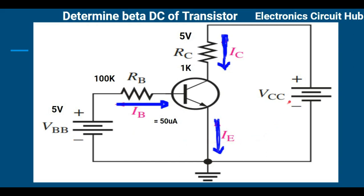Now let us understand more about the collector-to-emitter junction. In the collector-to-emitter junction, they have given the collector resistance value RC, that is 1K. And they have also given the voltage drop across this resistance, which is 5 volts. I have mentioned here this is 5 volts. They have not given any VCC voltage.